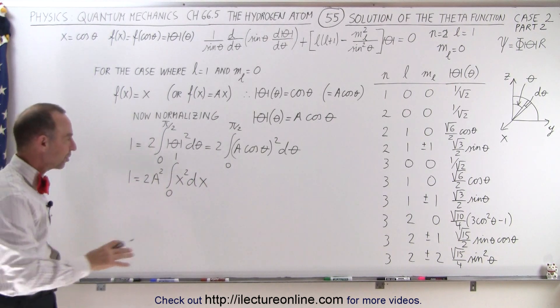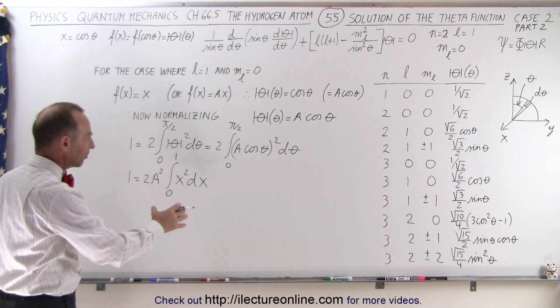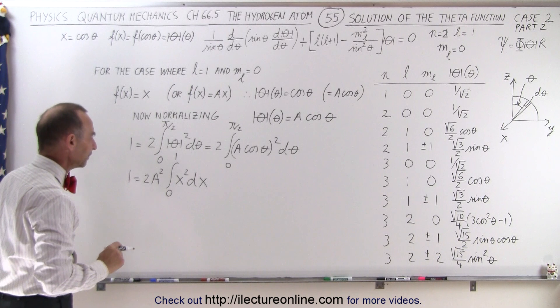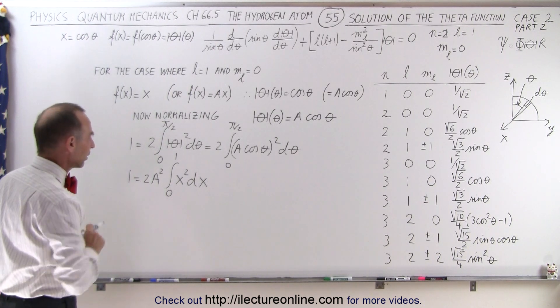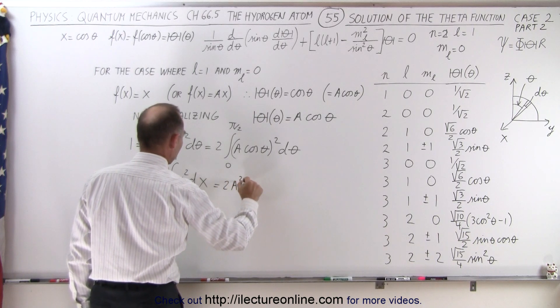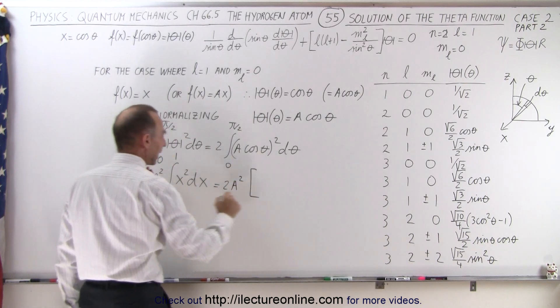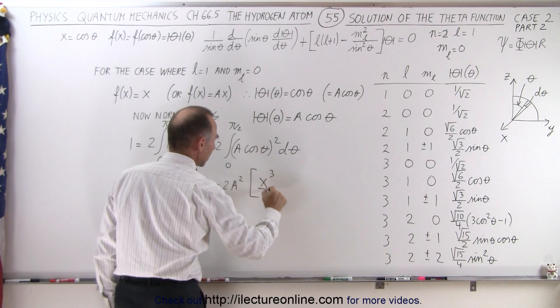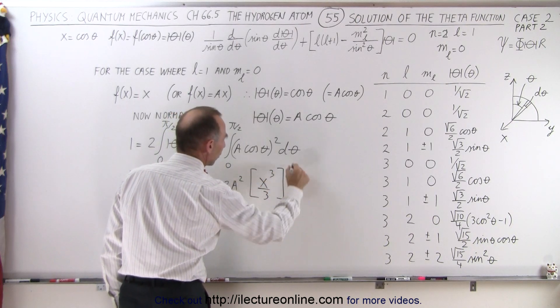So now we've changed our function to the f function in terms of x instead of the theta function instead of theta. It's a lot easier to work with it this way. And so what we're going to do now is say that this is equal to two a squared times, it'll be x cubed over three, with the limits from zero to one.